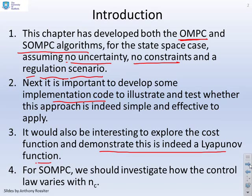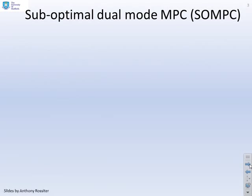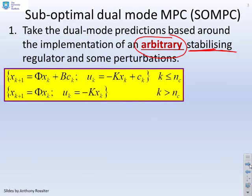And finally, we might want to look in particular at the SOMPC and see how that changes as we change the control horizon NC. Suboptimal dual-mode MPC, or SOMPC, takes the dual-mode predictions based around the implementation of an arbitrary, and there's a keyword here, stabilising regulator and some perturbations.